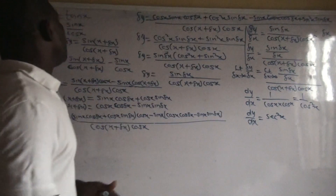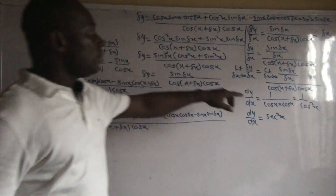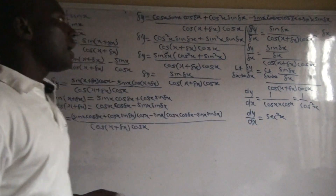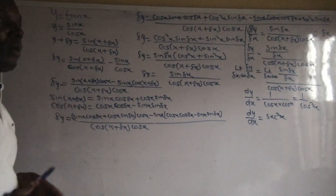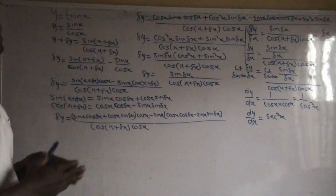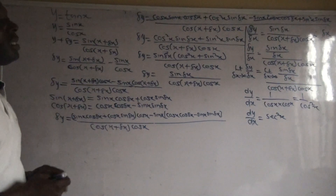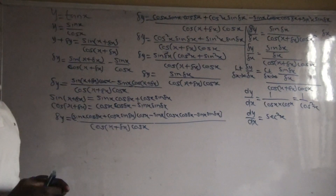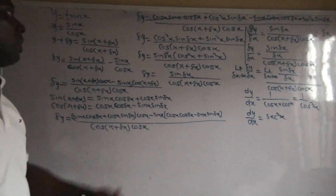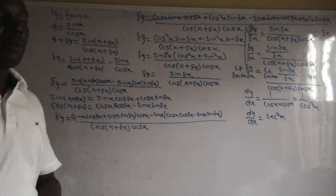So if we differentiate tan x, the result gives us sec²x from first principle. And even if we use the quotient rule, it will still give us the same result. But going through first principle, we have obtained the result.